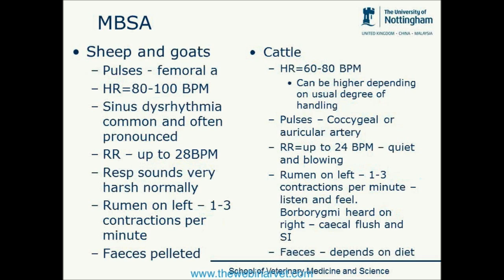Moving on to sheep and goats: heart rate is 80 to 100 beats per minute, similar to a dog. Sinus dysrhythmia is very common and often pronounced, which may not be what you'd expect to hear. Respiratory rate is up to 28 beats per minute, and both species have inordinately loud respiratory sounds — they sound like they have severe underlying respiratory disease, but this is completely normal. Forestomachs are very important and they should have one to three contractions that you can listen to and feel on the left-hand side.